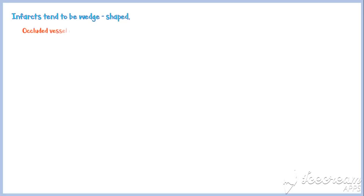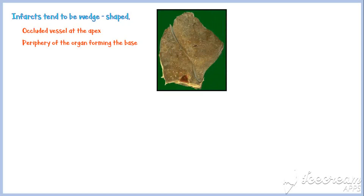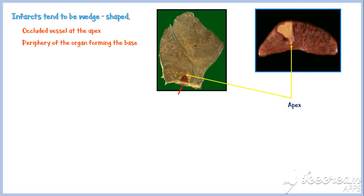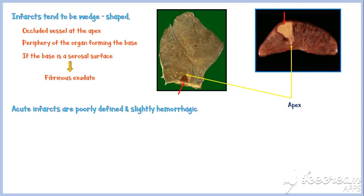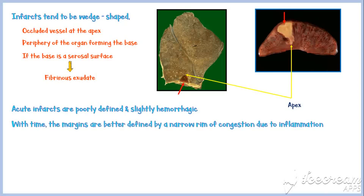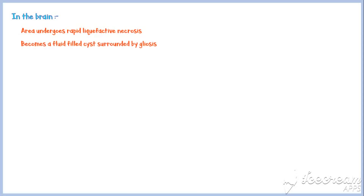Most of the time, infarcts tend to be wedge-shaped, with the occluded vessel at the apex and the periphery of the organ forming the base. In the images, yellow arrows indicate the apex and red arrows indicate the base. If the base is a serous surface, there can be a fibrinous exudate on the surface. Acute infarctions are poorly defined and slightly hemorrhagic due to seepage of blood; with time, margins become better defined by a narrow rim of congestion due to inflammation. In the brain, the infarcted area undergoes rapid liquefactive necrosis and becomes a fluid-filled cyst surrounded by gliosis.